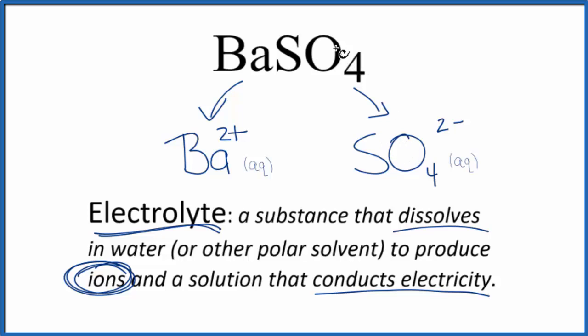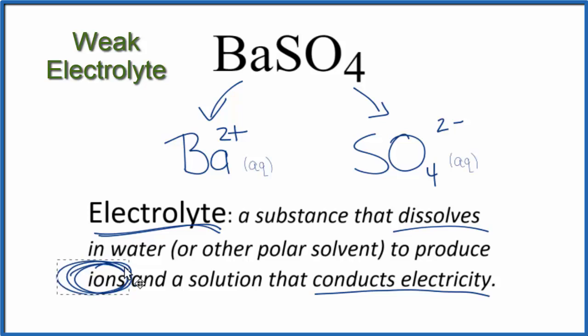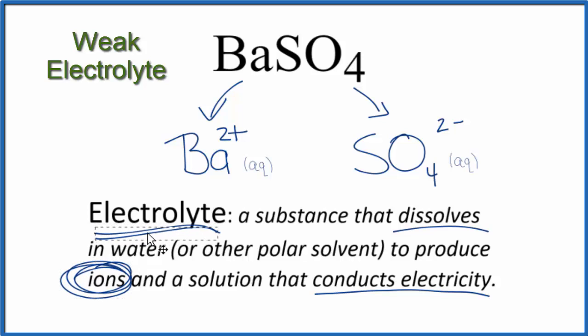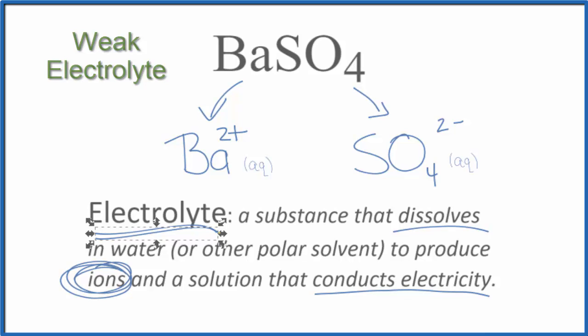So to recap: barium sulfate is insoluble. We only get a few ions, so it's an electrolyte, but it's a weak electrolyte. This is Dr. B. Thanks for watching.